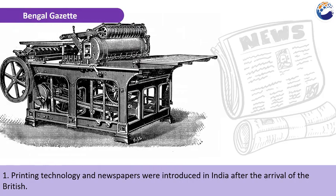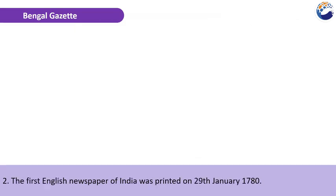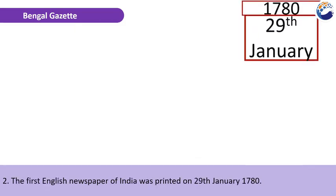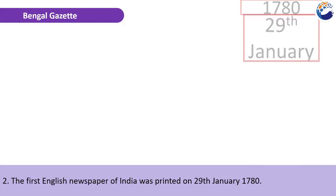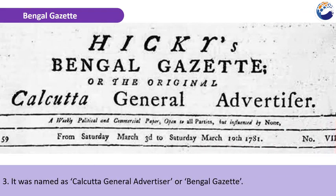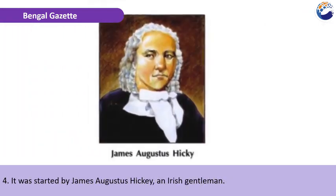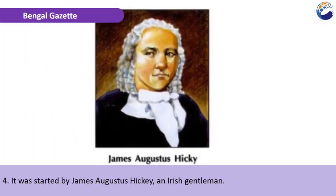The first English newspaper of India was printed on 29th January 1780. It was named the Calcutta General Advertiser, or Bengal Gazette, and was started by James Augustus Hickey, an Irish gentleman.